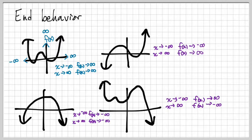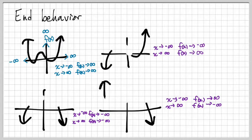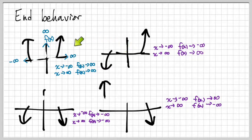What you need to know about end behavior is that what is happening in the middle doesn't matter. So if I erase everything happening in the middle, you just see our arrows — the end behavior. The end behavior is only the arrows.